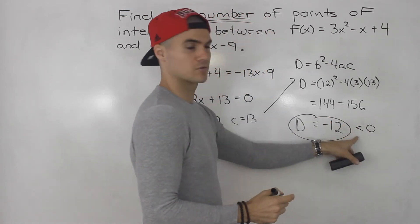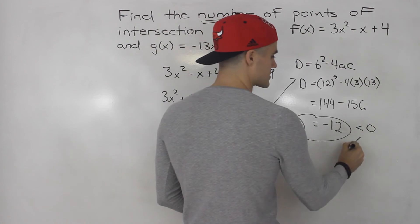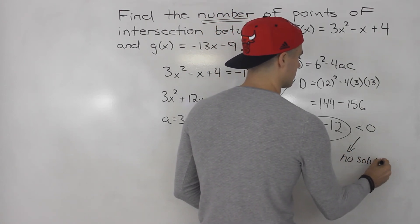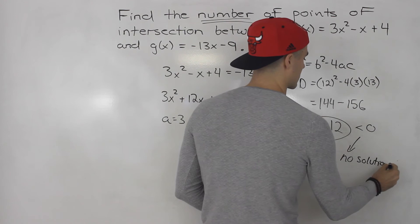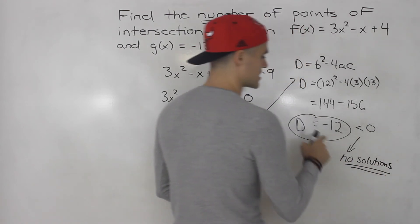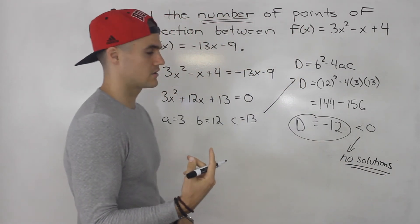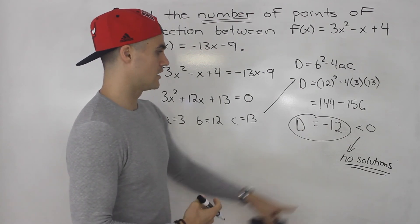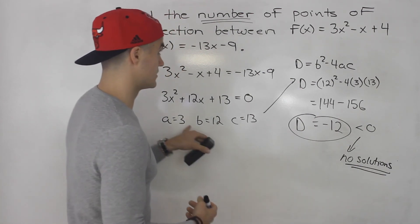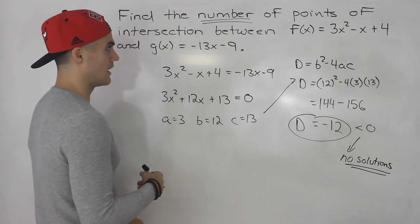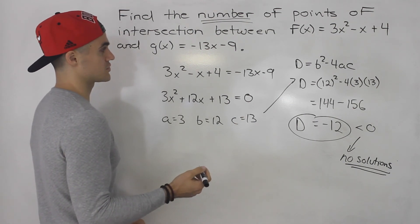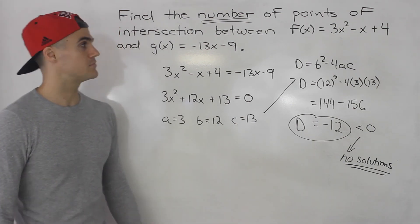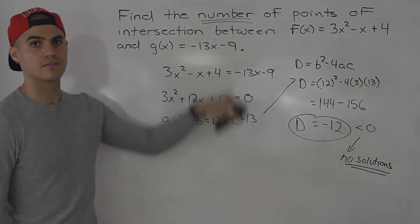The discriminant is less than 0. If the discriminant is less than 0, there are no solutions. If it were equal to 0 there would be one solution, and if greater than 0 there would be two. So because there are no solutions, there are 0 points of intersection between this quadratic and this line.